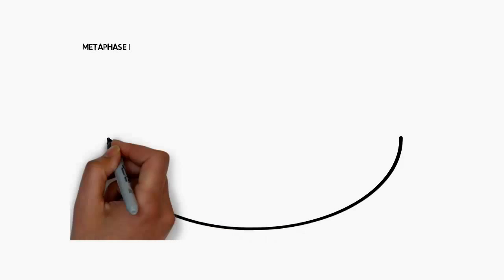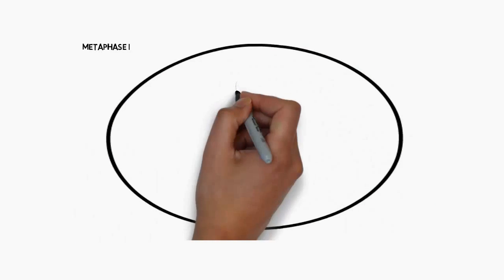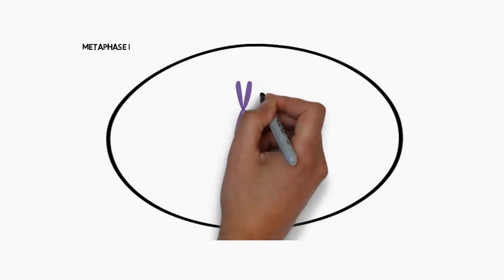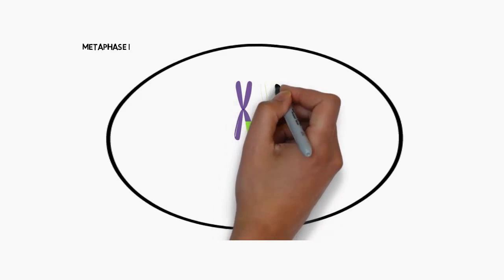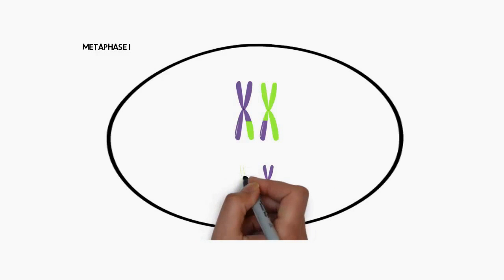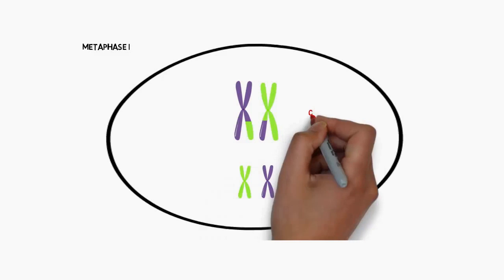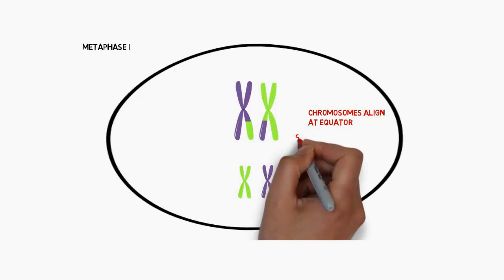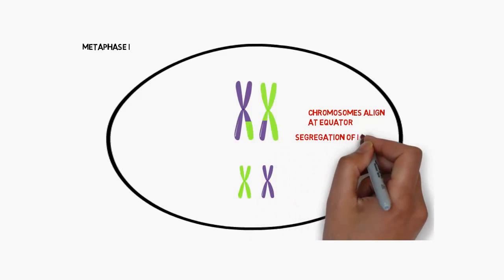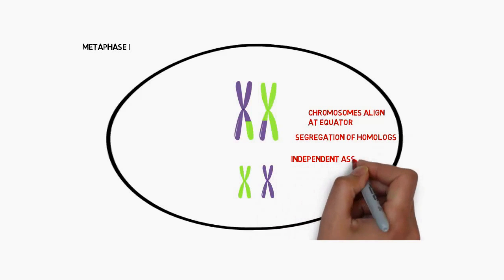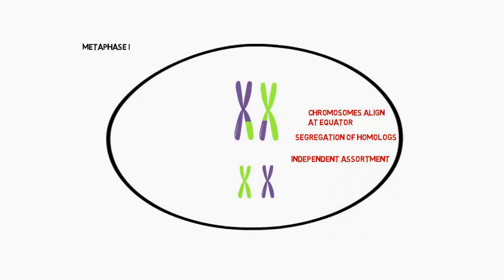In metaphase one — this is the first division of meiosis — we can see the aftermath of crossing over where genetic material has been exchanged on the chromatids of opposite chromosomes. The chromosomes line up in the centre of the cell, what we call the equator. Segregation also starts to occur here, where the two large chromosomes and the two smaller chromosomes are going to be pulled apart from each other.